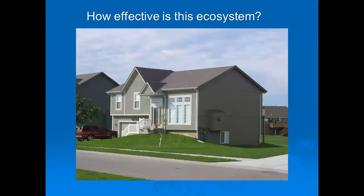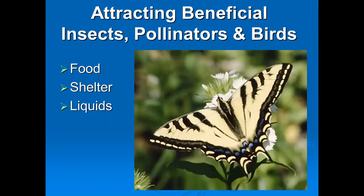Does this property have much of an ecosystem? I don't see very many shrubs — matter of fact, there are none. There is one new tree in the landscape, but there are no flowers for nectar. There will be a few leaves on that tree and maybe one bird nesting in it. But this is the kind of landscape that's void of any plant materials, and probably void of any kinds of birds, wildlife, or insects. We want to attract insects, birds, and other pollinators. To do that, we need food, shelter, and liquids.